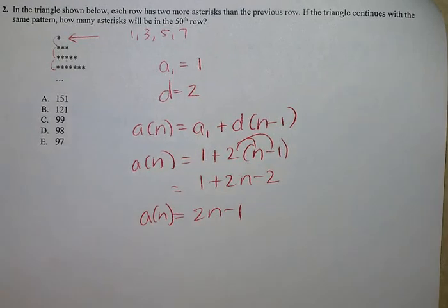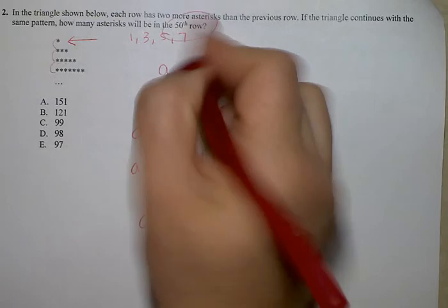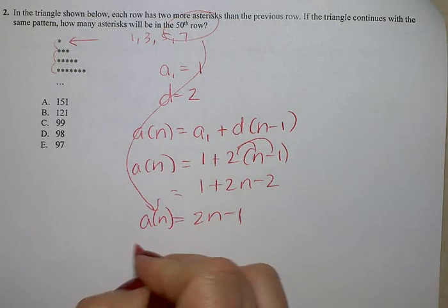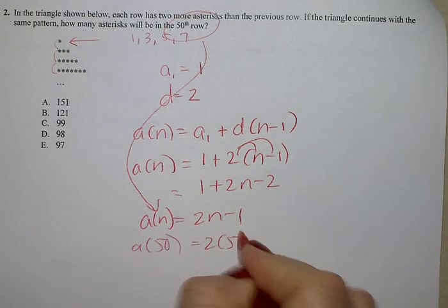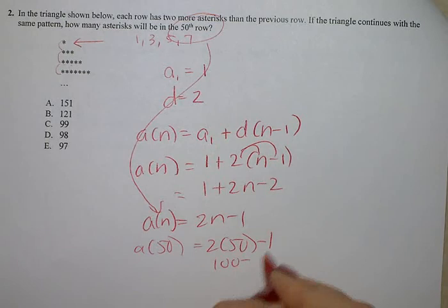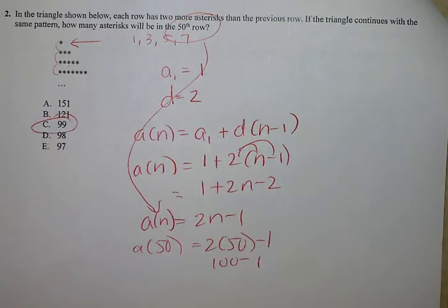Now that doesn't get me the answer quite yet. Now I have to read the question, and it says in row 50. So I'm going to replace n with 50. I know 2 times 50 is 100. Take 1 away from 100, and you get an answer of 99.